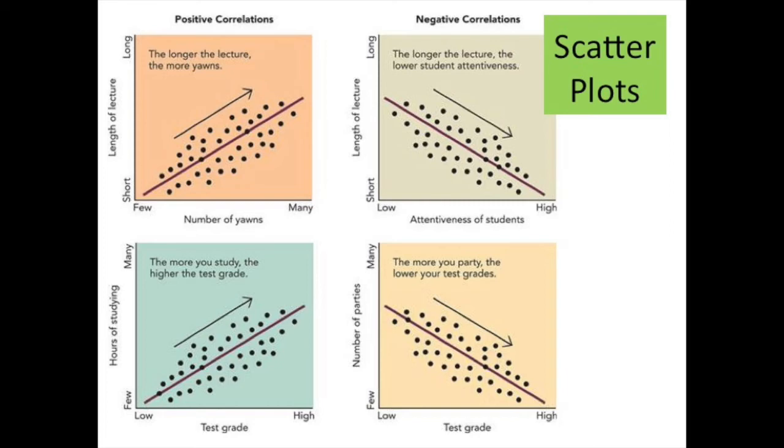You will see the same type of relationship below this, where we have one other scatterplot showing the number of parties attended, and then it's showing your test grade decreasing. So the number of parties, that is increasing. Your test grade is decreasing. Once again, we are moving in opposite directions, an inverse relationship, which means that there is a negative correlation, and you would be representing this with a negative correlation coefficient.